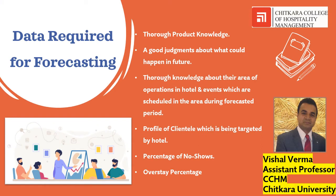Regarding the data required for forecasting — the sales team must have thorough product knowledge about what they're selling, including room categories and outlets. They must be aware of past records and be able to foresee future business. They should also know about events scheduled in the city — for example, in Chandigarh, the Rose Festival, IPL matches, or the wedding season starting in October-November. Hotels always prefer to block those dates and sell rooms or banquets at higher rates.